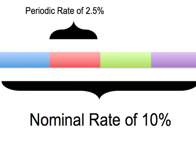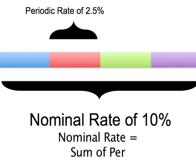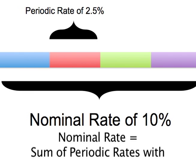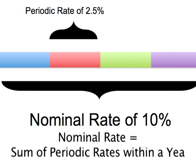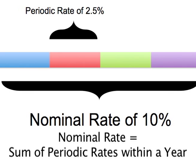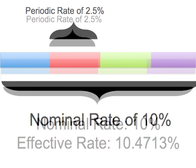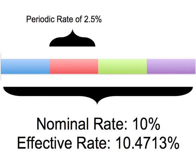For example, a nominal annual rate of 10% compounded on a quarterly basis is the same as a periodic rate of 2.5%. The effective interest rate is the actual rate of interest you receive in one year after compounding the interest.